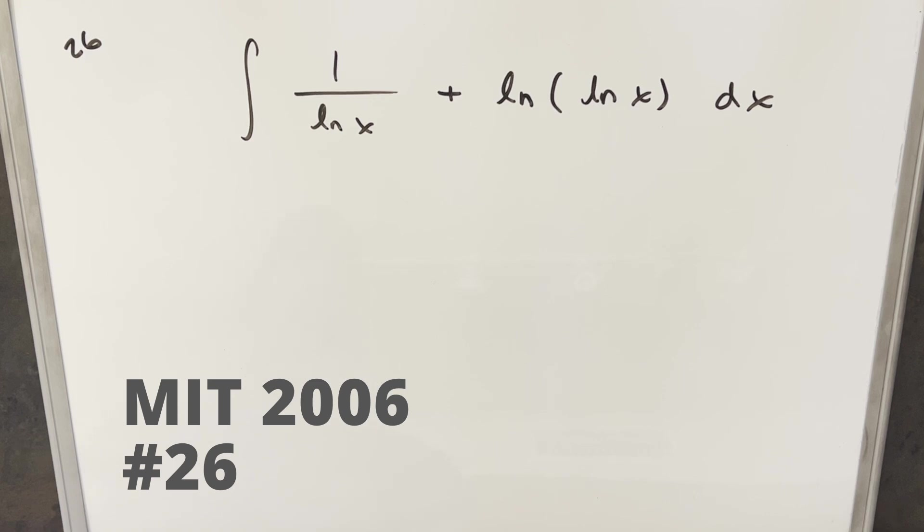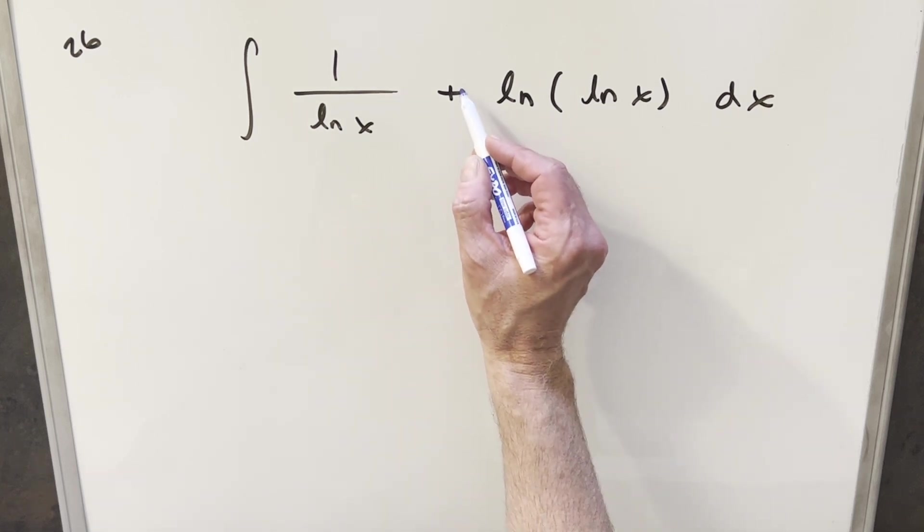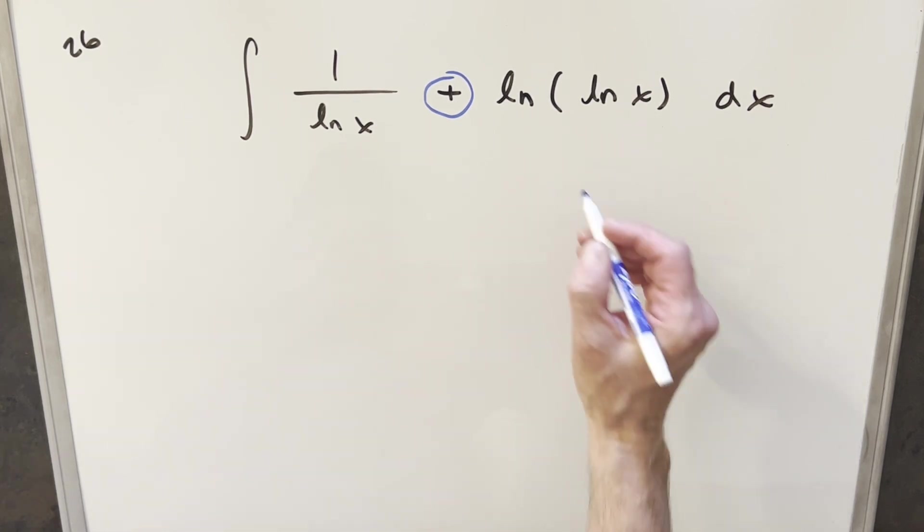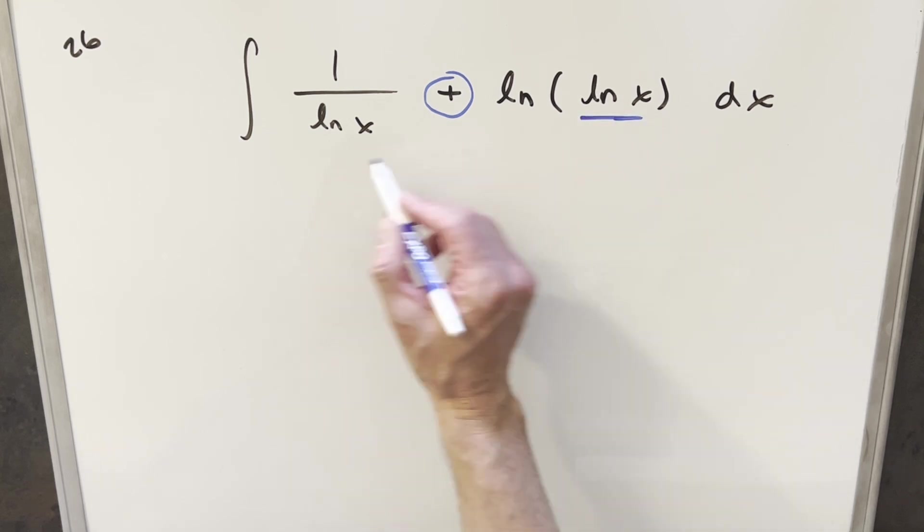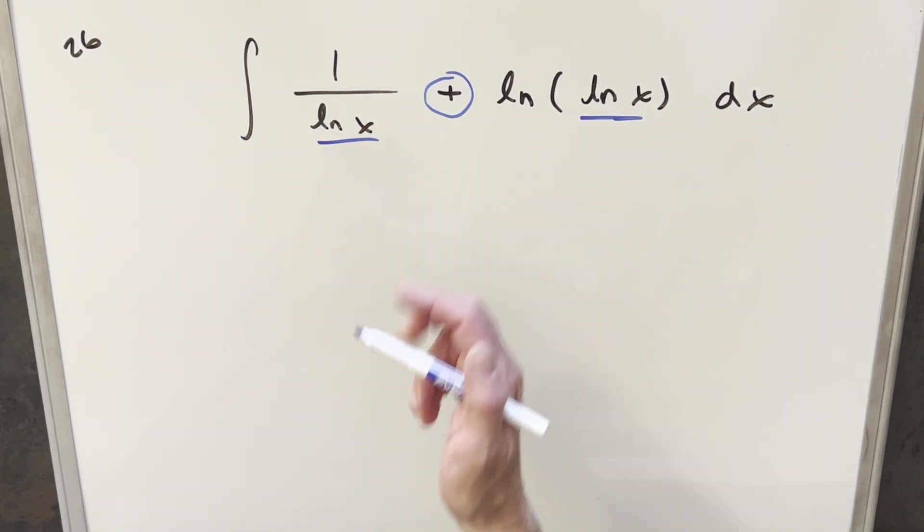We have the integral of 1 over ln x plus ln(ln x) dx. The first thing to notice is that we've got a plus sign in the integral, which means we could break it up into two integrals, but usually in these problems, that's not what they want you to do and it's probably going to be harder that way. Just noticing the similarity between the natural log here and natural log here, it's making me think that this whole thing is somehow the product rule.